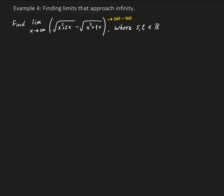So we have to rewrite this function. We're going to do that by using the conjugate. So we have the square root of x squared plus sx, minus the square root of x squared plus tx. I'm going to put all this over one.